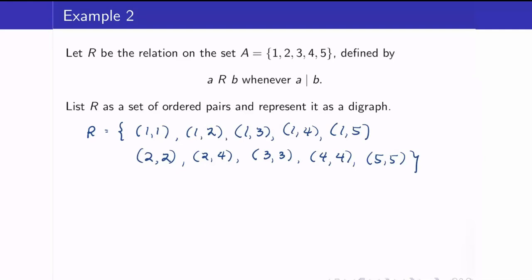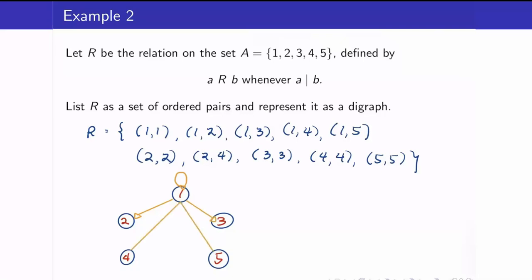How will we now look at its corresponding graph? I have 5 elements — vertices 1, 2, 4, 3, and 5. We have the ordered pair (1,1), so I will be using arrows to denote that it is a directed graph. From 1, we draw edges to 2, 3, 4, and 5. Next, we have (2,2), (2,4), (3,3), (4,4), and (5,5). All the self-loops — we call those loops.